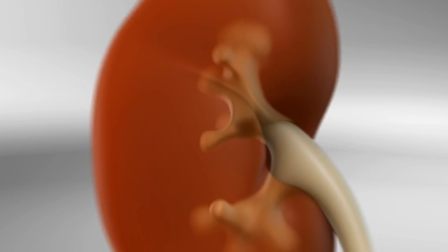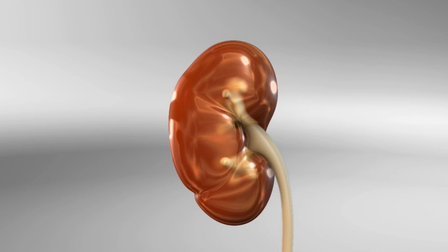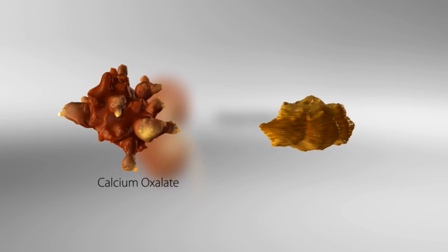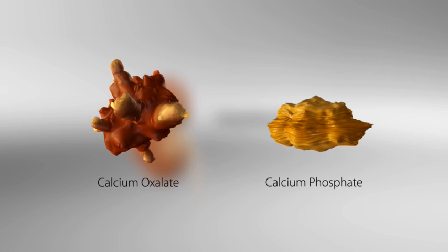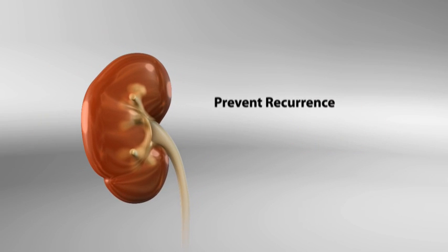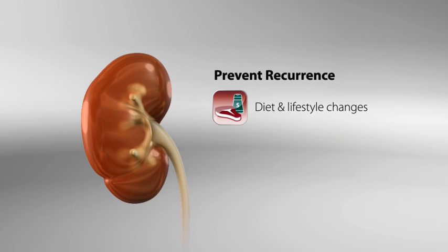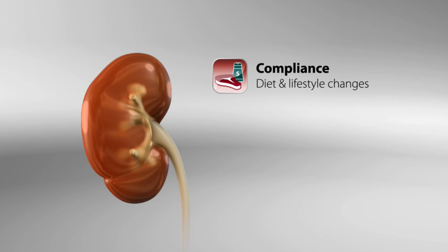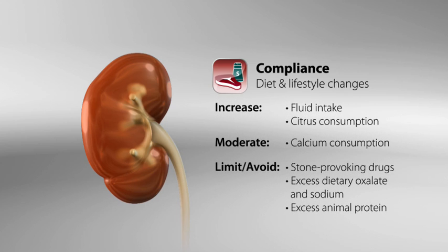There is no cure for kidney stones, but once an acute episode has been resolved, the key to therapy is simple: preventing recurrence. And fortunately, the most common stones — calcium oxalate and calcium phosphate — can be effectively managed with a combination of diet and lifestyle changes and medication. Compliance with proven management guidelines, such as increasing fluid intake and avoiding stone-promoting foods, can significantly reduce stone recurrence.